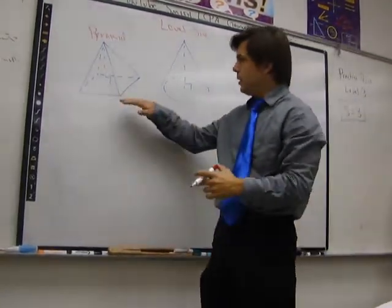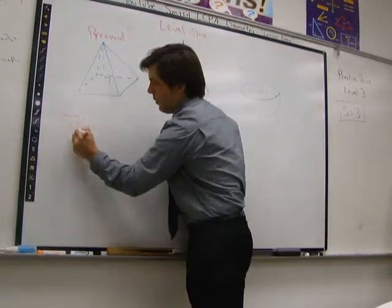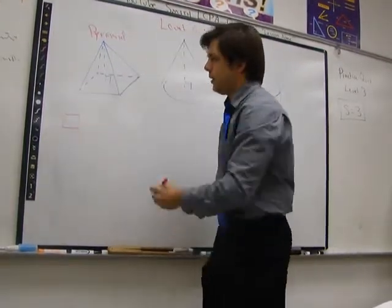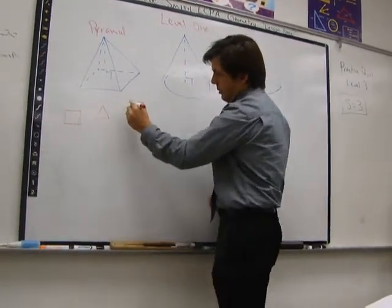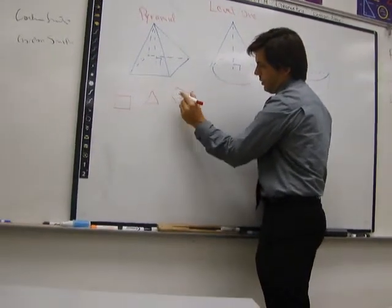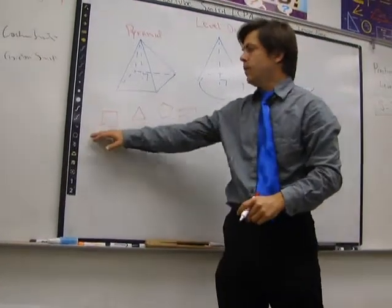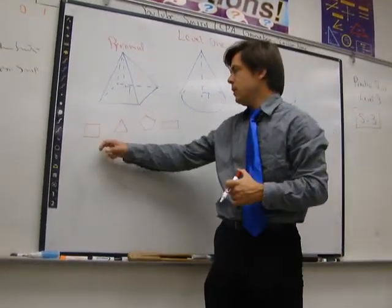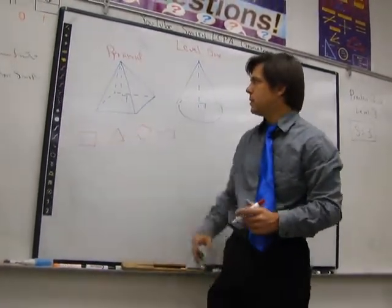A pyramid can have any type of polygon for a base, although typically what you see is a square for a base. You'll also see occasionally triangular-based pyramids. Less common, but still possible, are pentagon base or rectangular base. We won't deal with these until level 4. Everything we'll do until then will be with the square base.